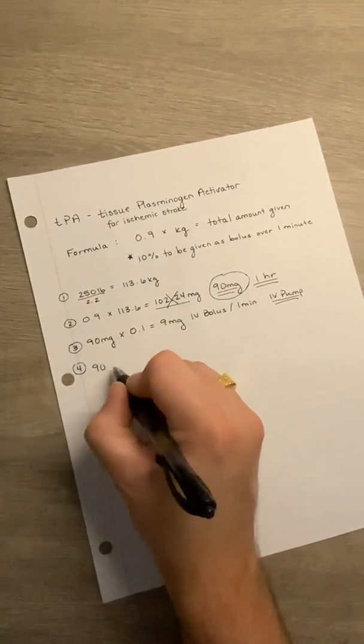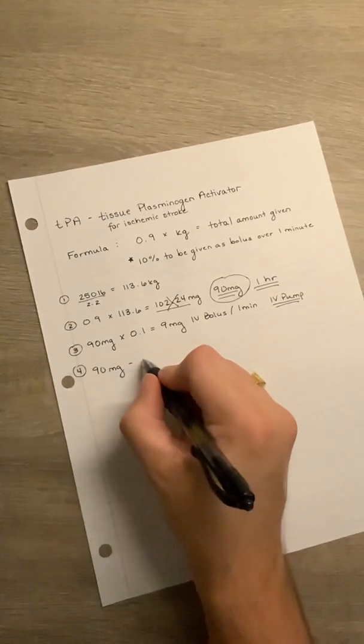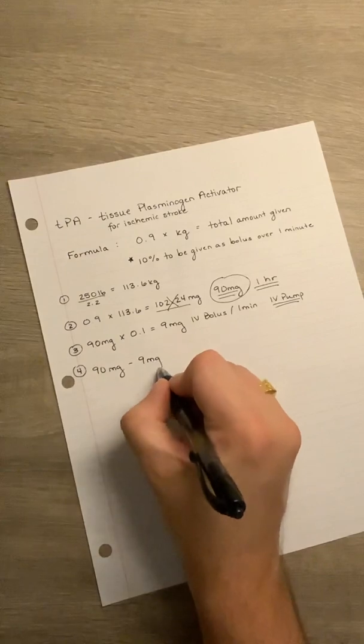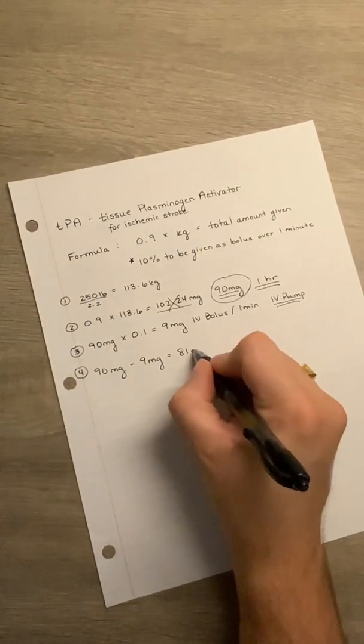We take our 90 milligrams. That is our total amount given. We subtract our 9 milligrams. That's going to give us 81 milligrams remaining.